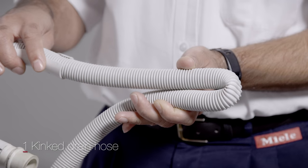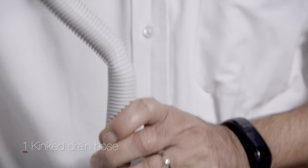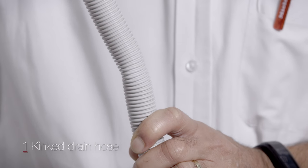The first possible cause of a drain fault could be a kinked drain hose. Unkink this hose to stop the obstruction of water flow.